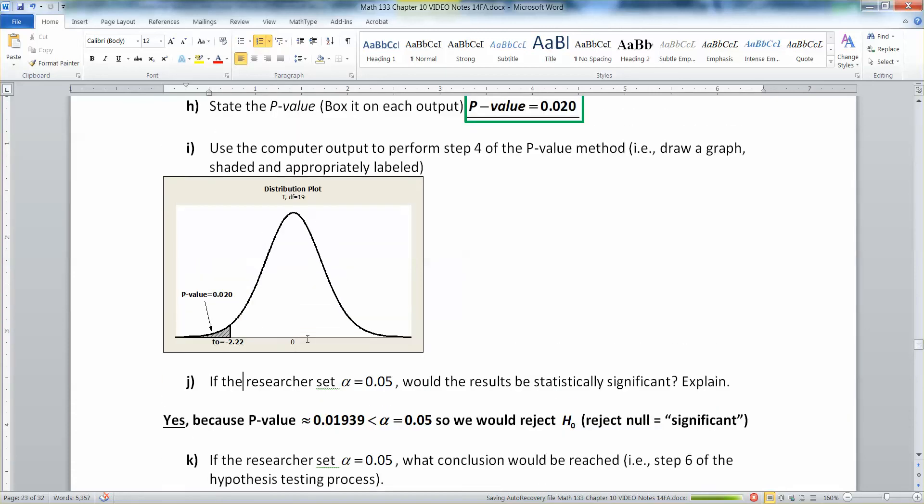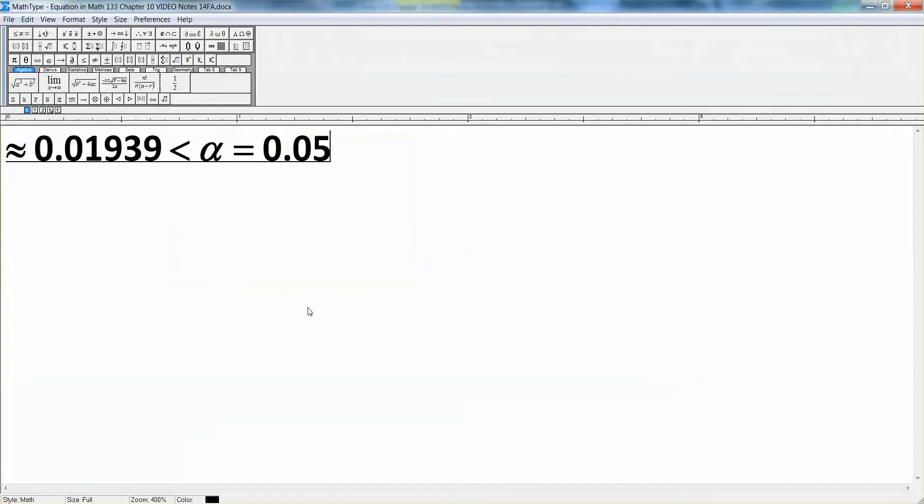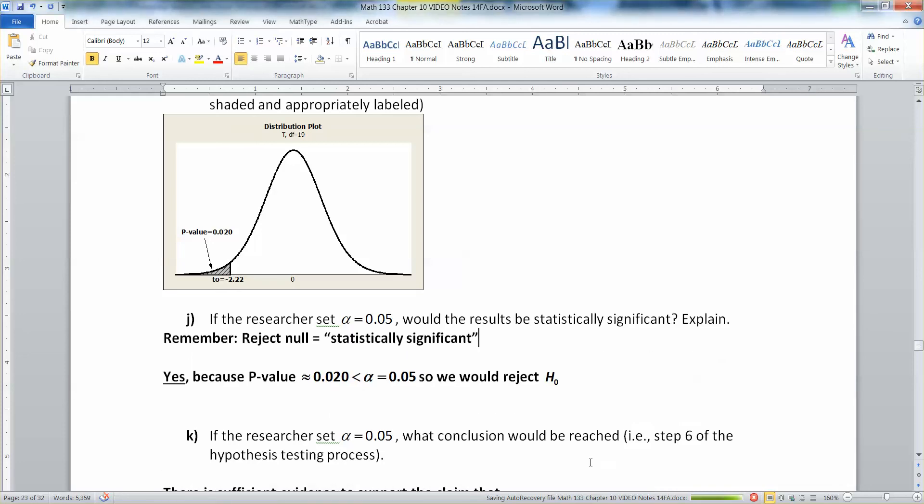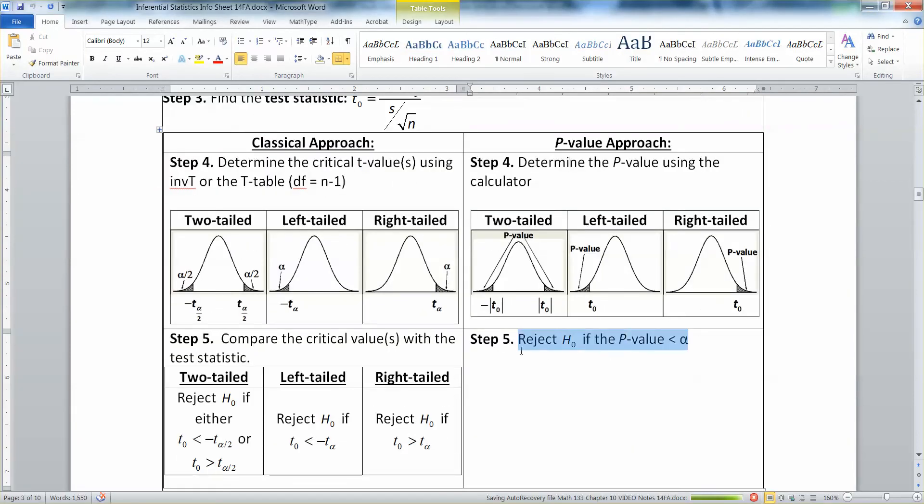All right now if the researchers set alpha to be 0.05 would those results be statistically significant? And the answer is yes. Remember that rejection of the null is what is significant quote unquote. So because your p value which is 0.020 is less than your alpha you are going to reject the null hypothesis. And rejection of that null hypothesis is what counts as statistically significant. So are our results statistically significant? Yes they are again because that p value is less than alpha and that's always what you're looking for with the p value method. You're always looking to see if your p value is low. If it is less than alpha you will reject.